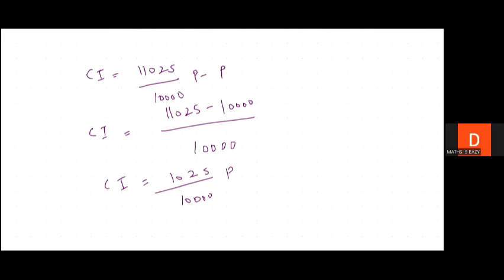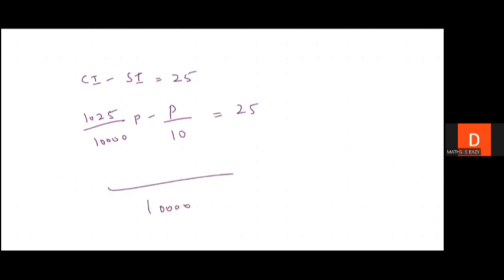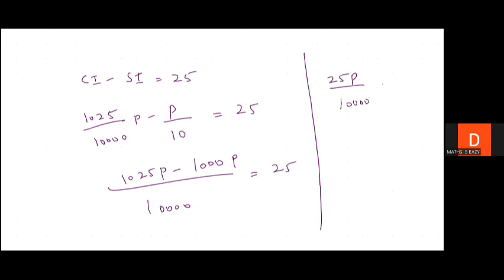In the question, CI − SI = 25. So: 1025P/10000 − P/10 = 25. Taking LCM of 10000: (1025P − 1000P)/10000 = 25. That gives 25P/10000 = 25, so P = 10000/25 × 25... Therefore, the sum is equal to Rs. 10,000.